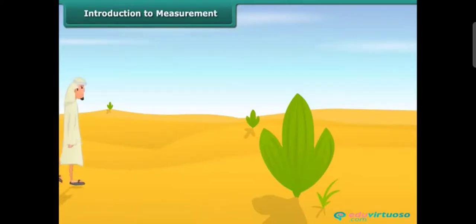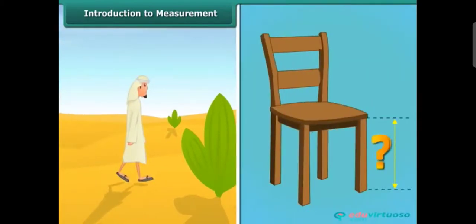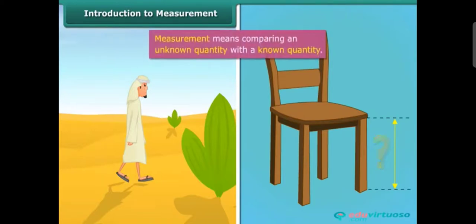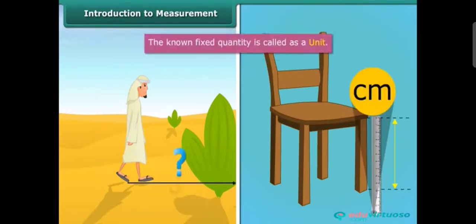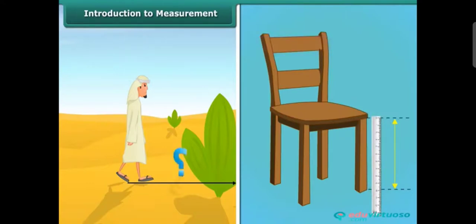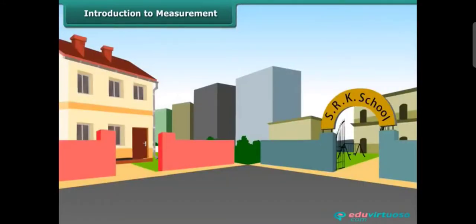Introduction to measurement — do you know how people measure how much they have traveled, or what the length of a leg of a chair is? This is done using a term called measurement. Measurement means comparing an unknown quantity with a known quantity. The known fixed quantity is called a unit. When you derive the results of this calculation, you get the measurement in two parts: one is a number and the other is the unit of measurement. You can also calculate the distance from one place to another, for example the distance from school to your house.